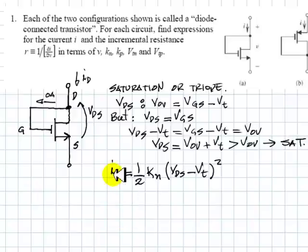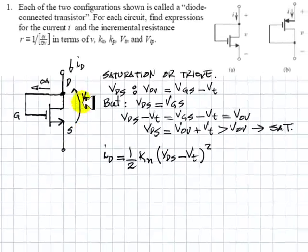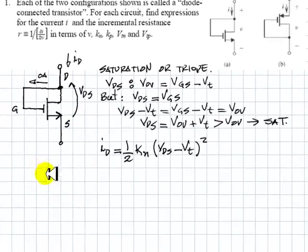by VDS minus VT squared. And that is the current of this diode-connected transistor as a function of its voltage, current in the diode as a function of VDS, the voltage in the diode.